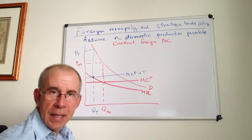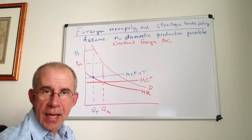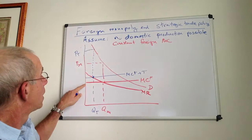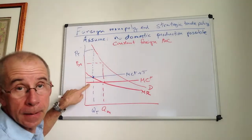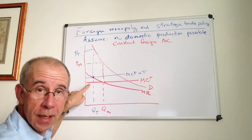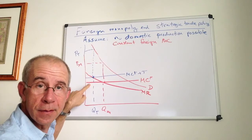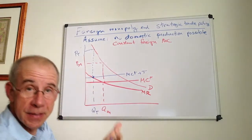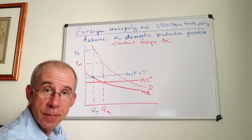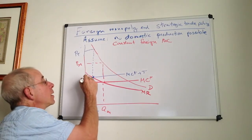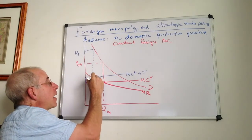In many ways the basic structure is the same as before. We've got a reduction in quantity sold inside this market as a consequence of the tariff and higher prices on domestic consumers. Let's identify some of these effects.